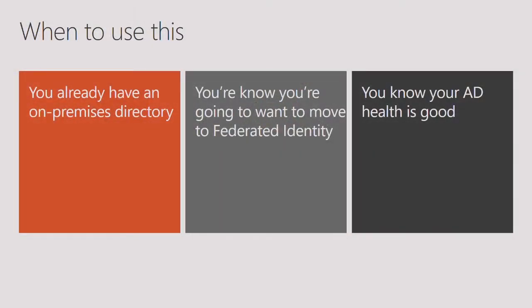You should use synchronized identity when you already have an on-premises directory and want to synchronize your user accounts — and optionally, passwords. You should also use it if you know you'll eventually want to move to federated identity, as it's a good stepping stone. And use it when your on-premise Active Directory is in good health — when your database is a good representation of your users with up-to-date passwords and information, Azure AD Connect's express settings will work really well right out of the gate.